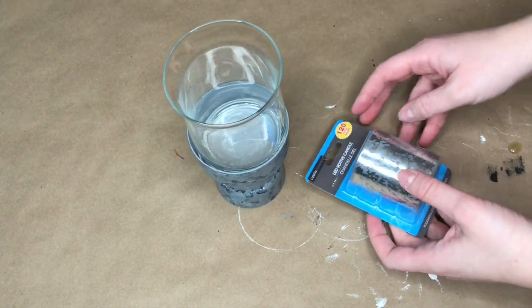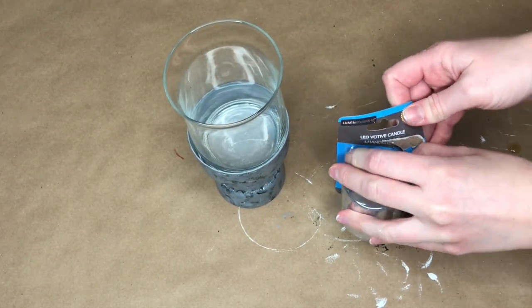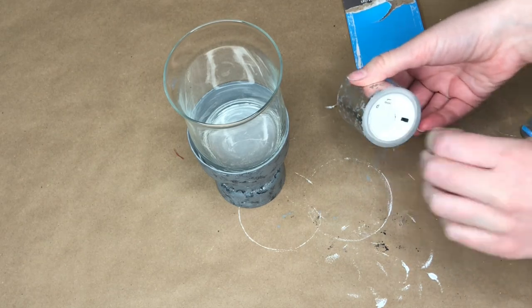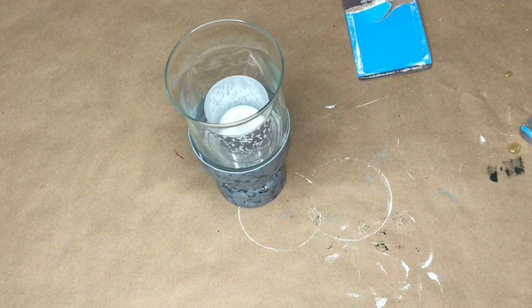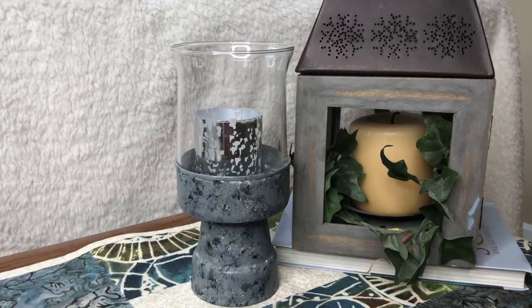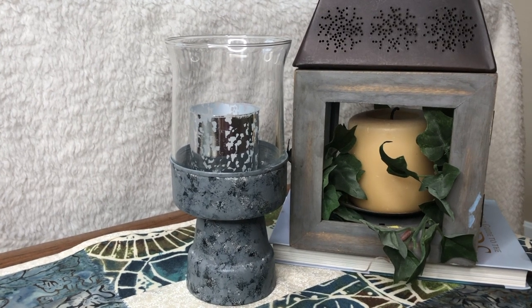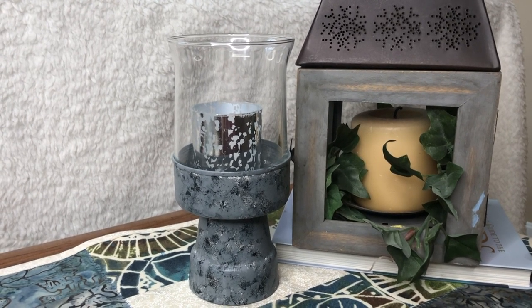And last, it's time to add your candle. I loved this silver one that I found at the Dollar Tree. I thought it went perfectly with this DIY, but you could also just add in a tea light. And this candle holder concludes all of the modern farmhouse DIYs for this week.